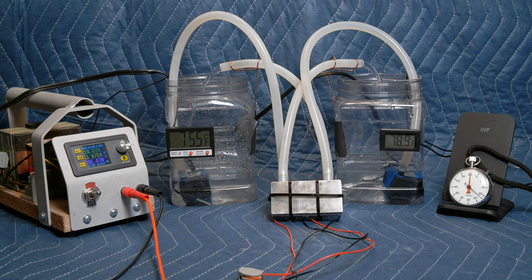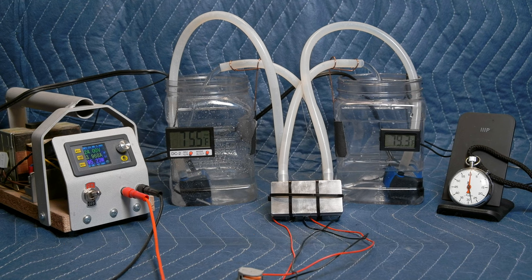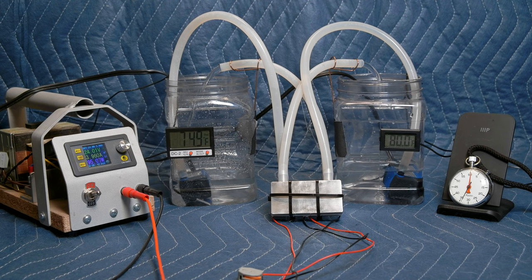A British Thermal Unit, or BTU, is defined as raising or cooling one pound of water one degree Fahrenheit. So each degree change here is one BTU. This is probably the only time where our U.S. units happen to be convenient.